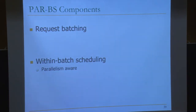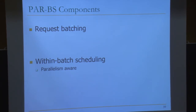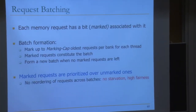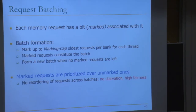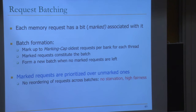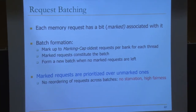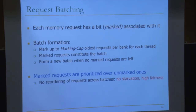For within-batch prioritization, you can use any existing policy — for example, row hit first then oldest first to exploit row buffer locality. But we also want to preserve intra-thread bank parallelism. The scheduler computes a ranking of threads and higher-ranked threads are prioritized over lower-ranked ones across all banks. This improves the likelihood that a thread's requests are serviced in parallel by different banks, since all bank schedulers prioritize threads in the same rank order.